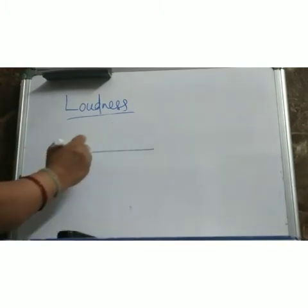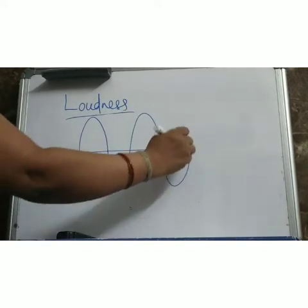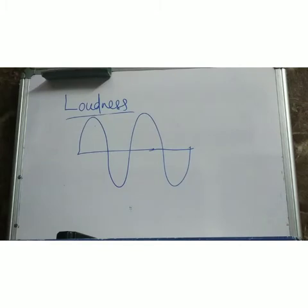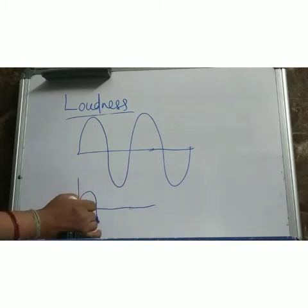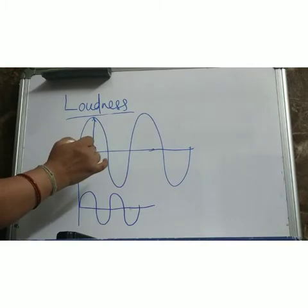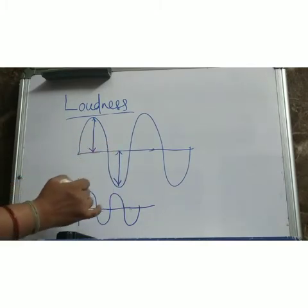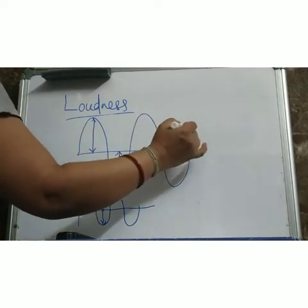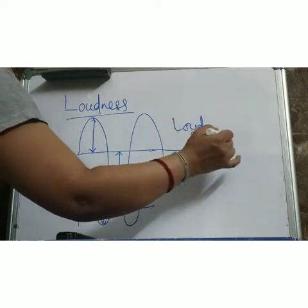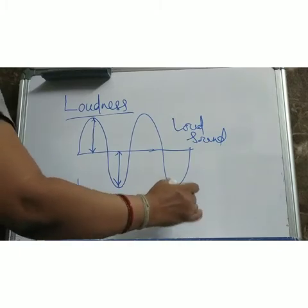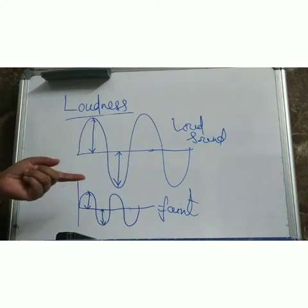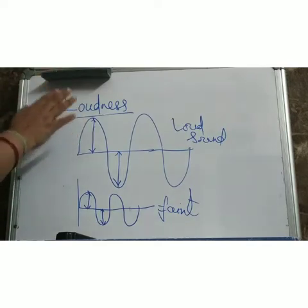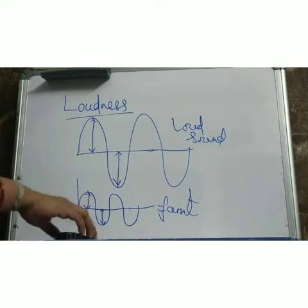For loud sound, the amplitude is large. When sound is faint or feeble, the amplitude is very small. You can clearly see: large amplitude corresponds to loud sound, and small amplitude corresponds to faint sound. So the loudness of sound depends on the amplitude.